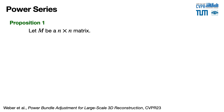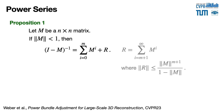But first, let's introduce the power series of a matrix. Let's consider a square matrix M. If all its eigenvalues are smaller than 1, then we can write the inverse of identity minus M as a power series, with the spectral norm of the error R bounded and converging to 0 as the order M increases.